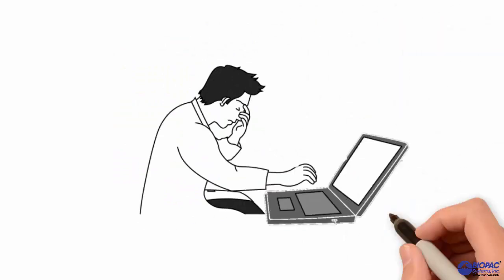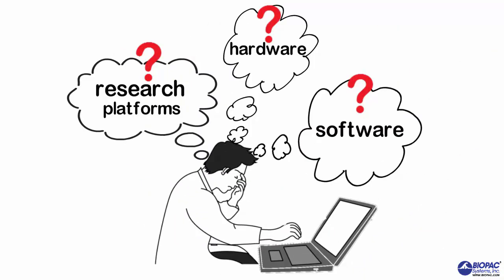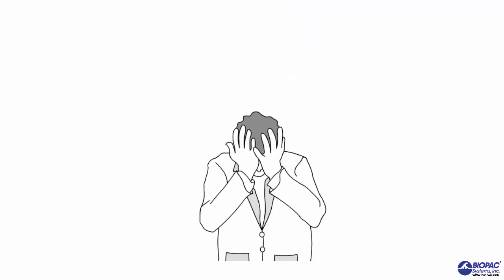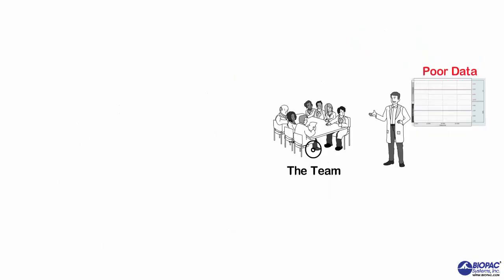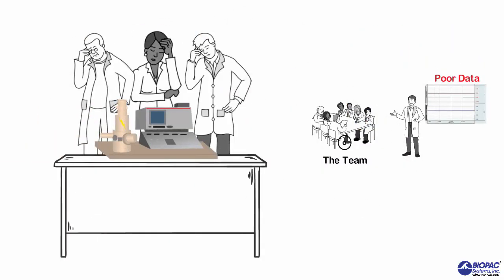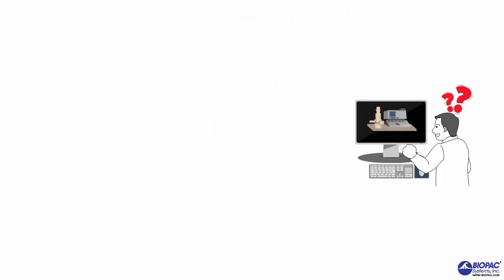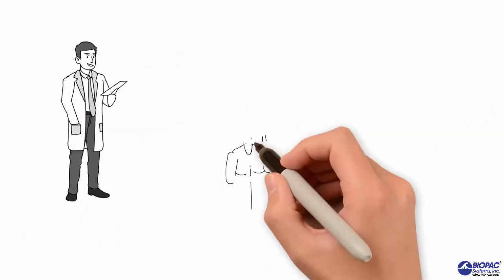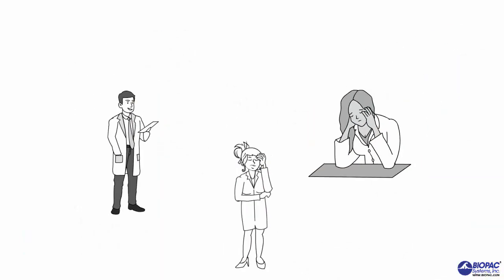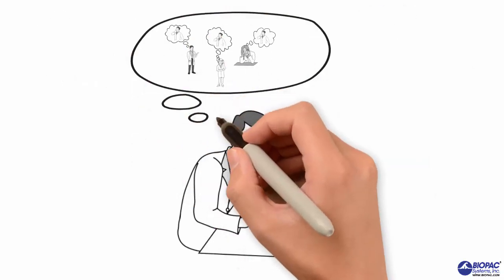But John is lost when it comes to selecting research platforms, hardware, and software. John doesn't know what he needs. And John knows that if he makes poor decisions, the team may not get the great data they need, or the equipment may be hard to set up, or the software may not be easy to use, or he may miss ordering something he needs. And the principal investigator and the whole team is not going to be happy with him.